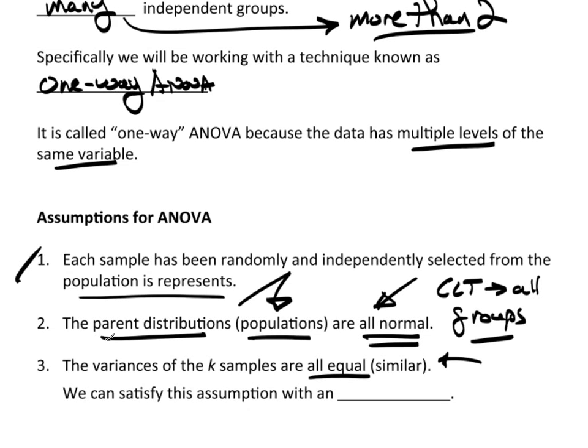So in order to do that, you need to make sure that it's safe to pool to begin with. What we're going to do is we will do an F-test. We can satisfy this assumption with an F-test, like I said a moment ago, just like we did on the two-sample t. But now because we have more than one group, more than one sample, the F-test will be based on the largest and the smallest variance.